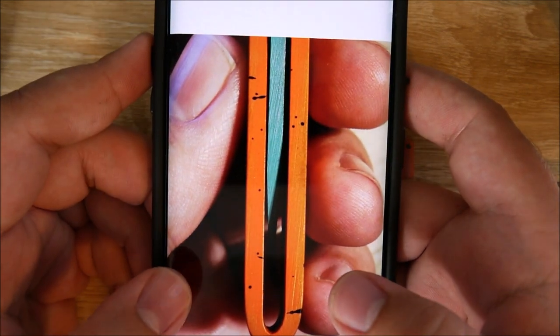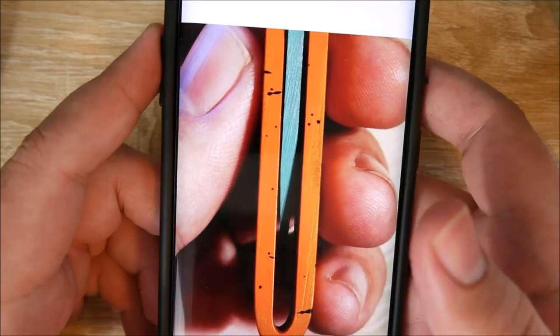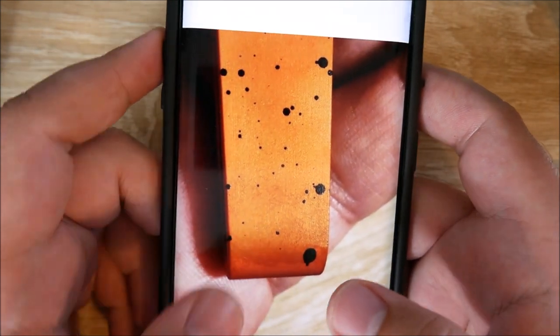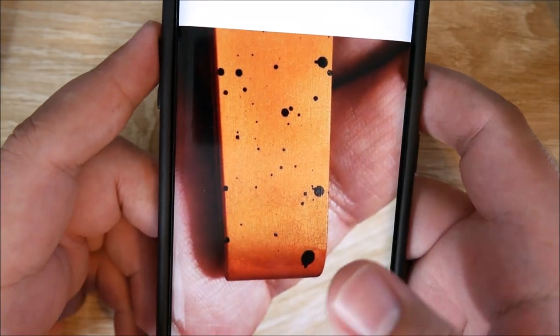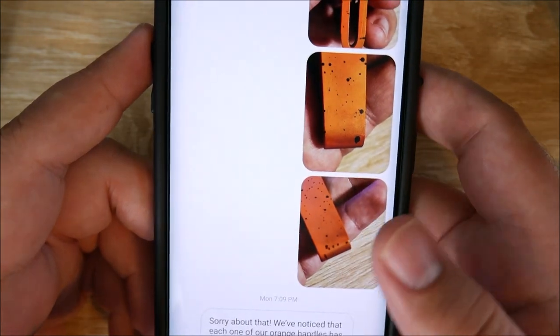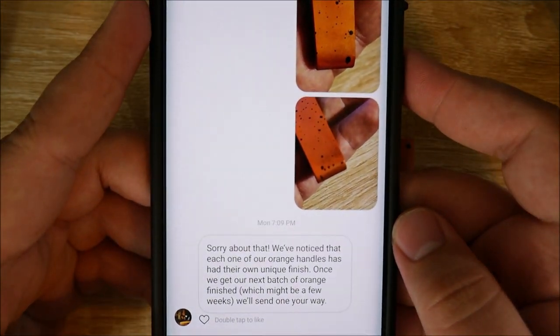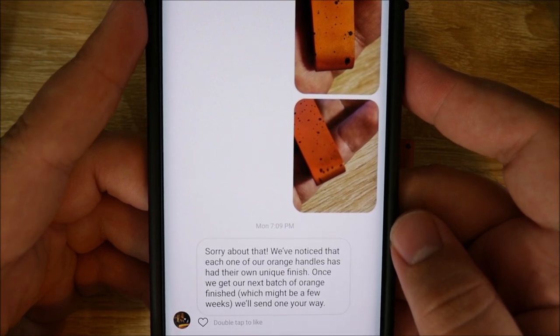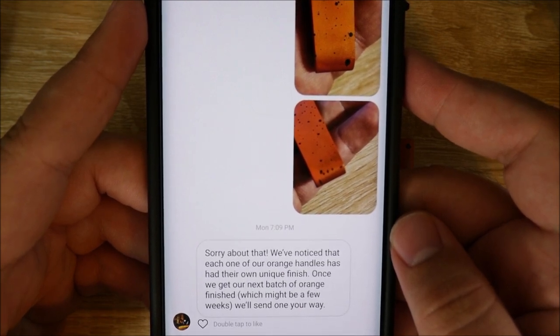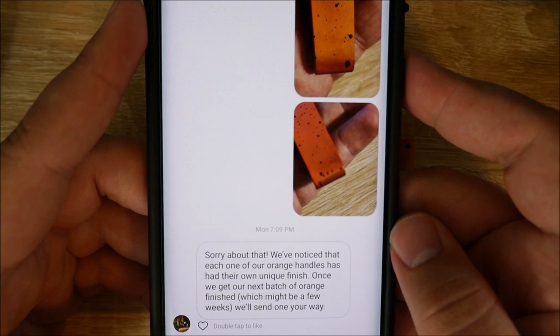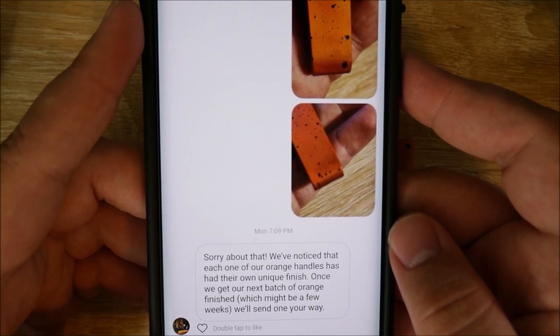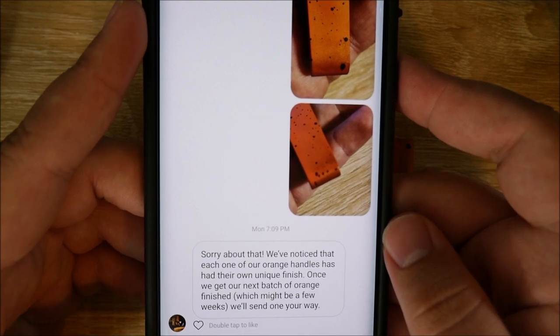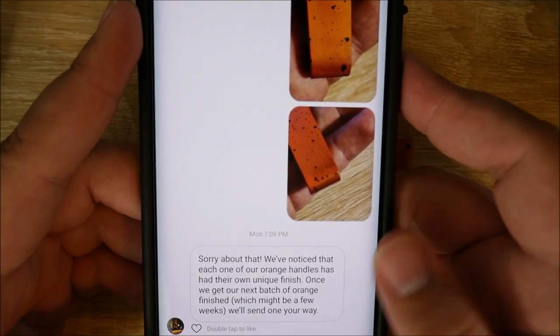So, the first picture I have here is of the centering. You can tell it is piss-poor, especially down this way. And then you kind of get that grayish dust towards the bottom down here that I was talking about. It looks like the paint was just a little smeared. So, what did they say? Sorry about that. We've noticed that each of our orange handles has their own unique finish. That sounds a little horse-shitty. But, that's fine. The paint wasn't really my concern, to be honest. $50, I don't expect perfection. Once we get our next batch of orange handles finished, which might be a few weeks, we'll send one your way.